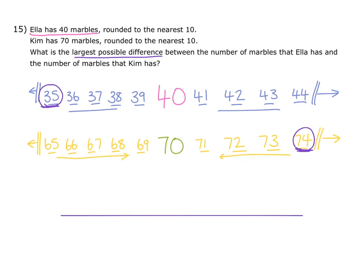We can do this using a number line. 35 at this end and 74 at this end, and we'll find the difference. If I count on 5 first of all, I would be at 40. Then if I count on 10, I would be at 50. Counting on another 10 means I would be at 60. Counting on another 10 means I would be at 70. And a final counting on of 4 means I make it to 74, which is our target.